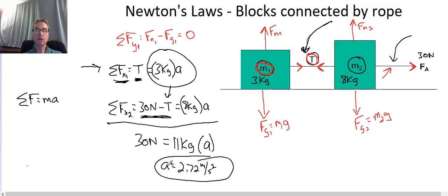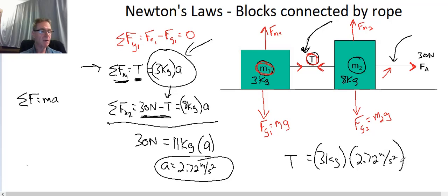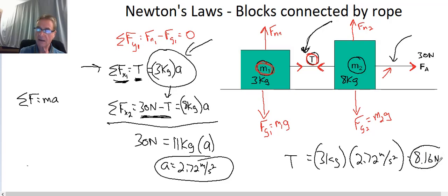Now we have the acceleration. To find T, I pick the simplest equation — T equals 3 kilograms times A — and plug in 2.72 meters per second squared. Multiplying gives T equal to 8.16 newtons. That's our final answer for the tension in the cable between the two blocks. I hope that helps — have a great day!